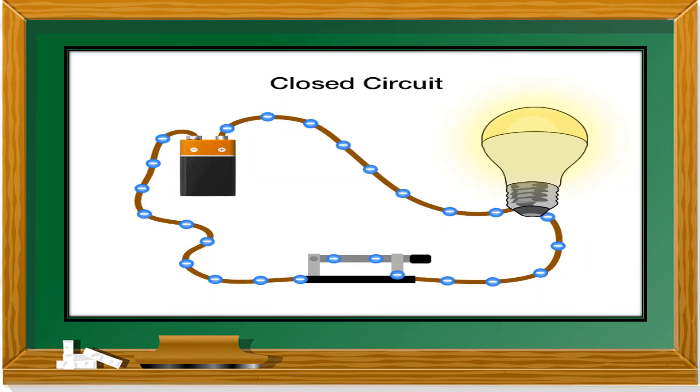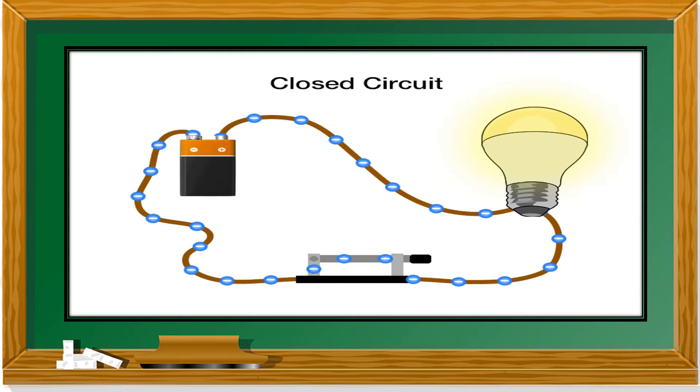To turn on the lights, you have to close the circuit by pushing the switch on. To turn off the lights, you have to open the circuit again by pushing the switch off.